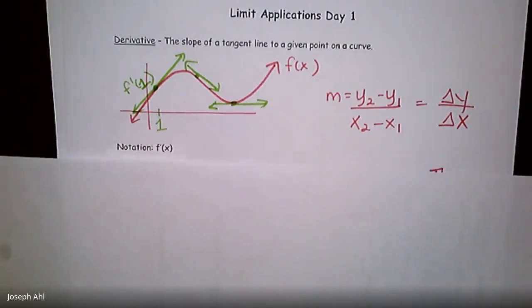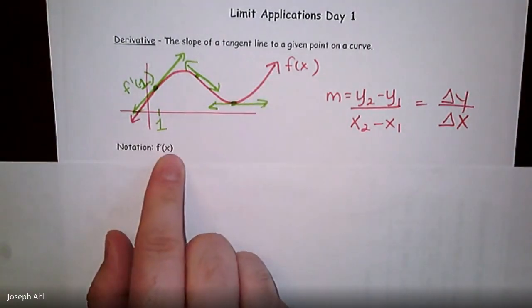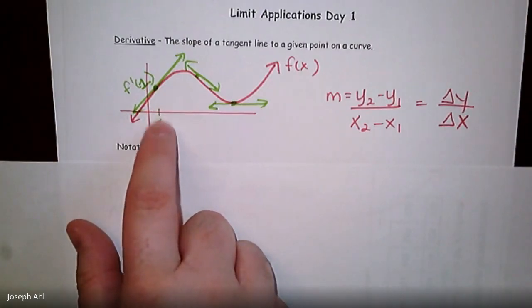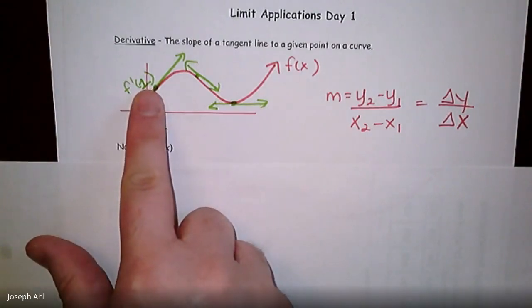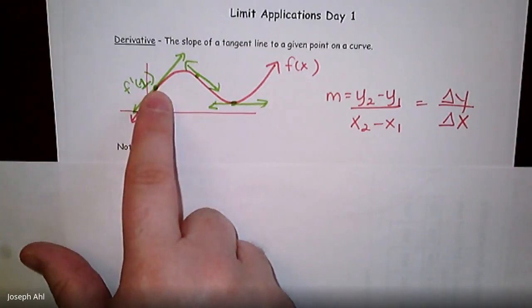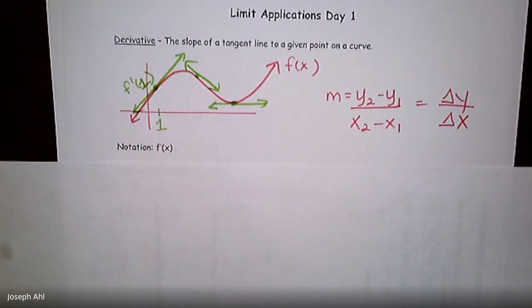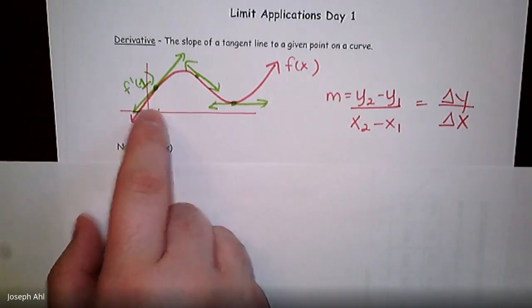Notation for derivatives. In general, the derivative of this function F of X would be denoted by F prime of X. You can see on the graph here, I've labeled where X equals one right there. So F prime of one, what that represents is that's the slope of this tangent line at X equals one. So just kind of a quick little bit about notation that we'll see come up over the next few days. F prime of X is pretty common that we'll see. But F prime of one represents the slope specifically at X equals one.